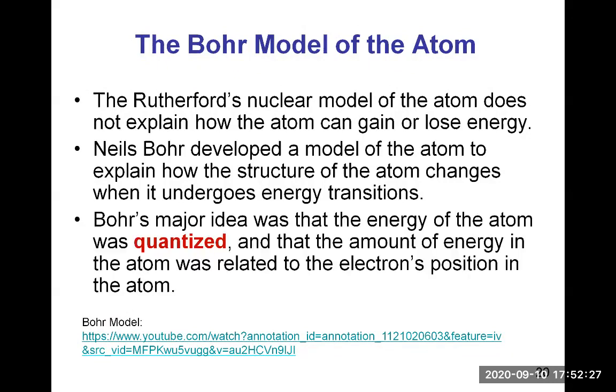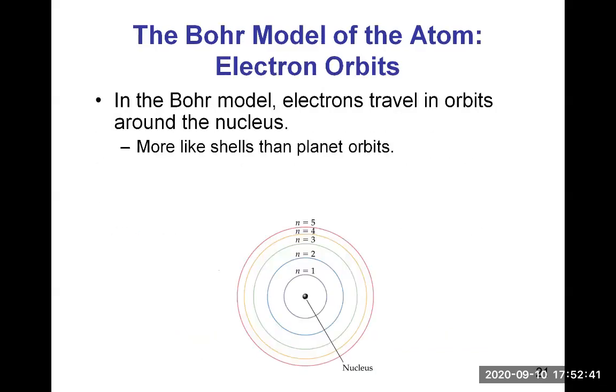Bohr's major idea was that the energy of the atom was quantized and that the amount of energy in the atom was related to the electron's position in the atom. Quantized means that there are only certain levels of energy that are allowed and nothing in between. In the Bohr model, electrons travel in orbits around the nucleus at a given amount of energy.